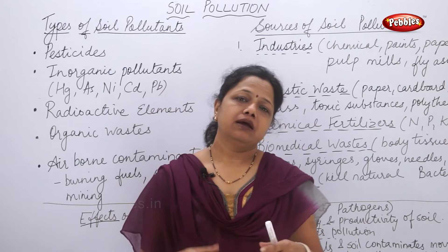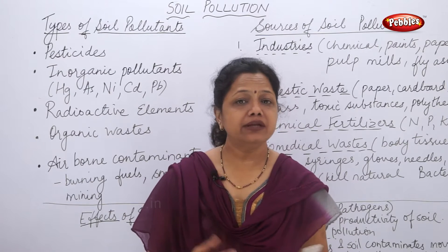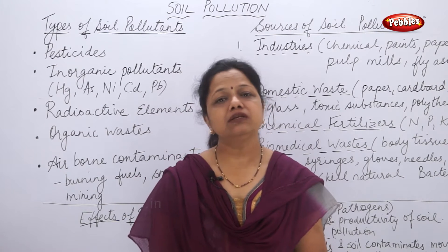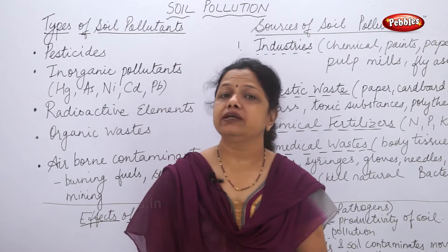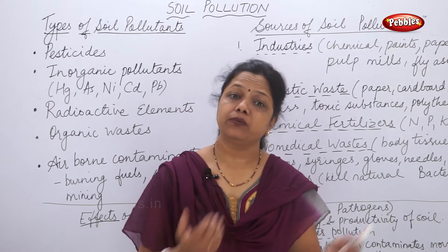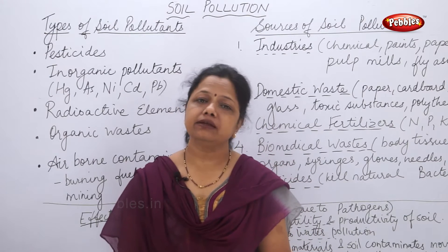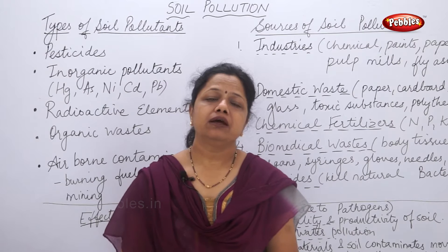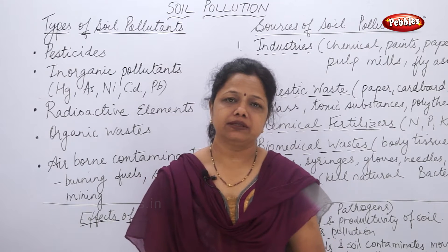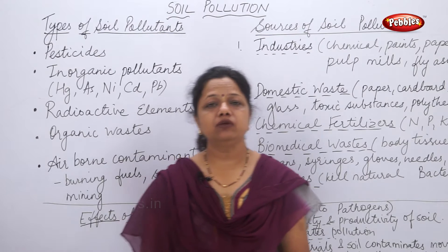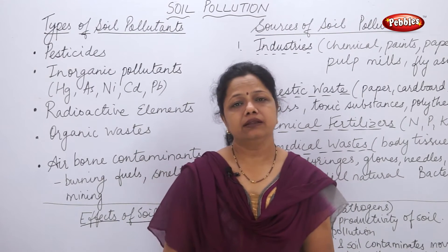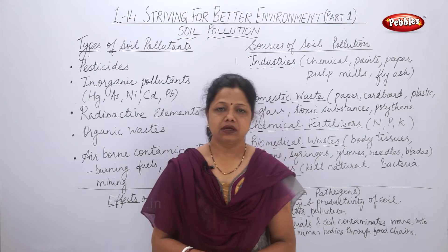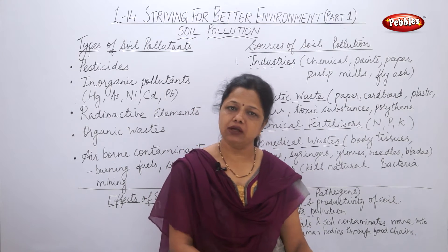Human beings are continuously modernizing themselves. Modernization and industrialization is resulting in these types of pollution. This pollution is mainly because of the chemicals used in agricultural plants, or the chemicals produced in industries and factories. In foundries — where huge burning takes place, such as in the metallurgy part where big blast furnaces are used — large numbers of pollutants are produced, and these pollutants are getting mixed with the soil or the land.